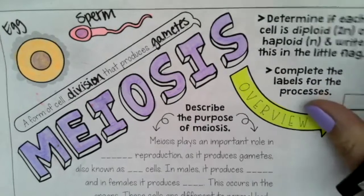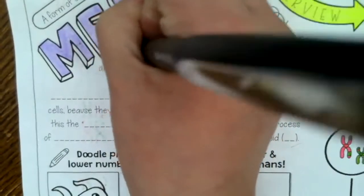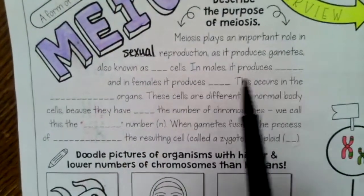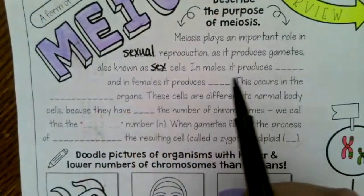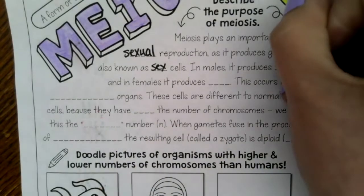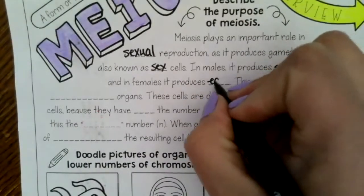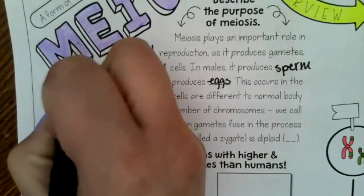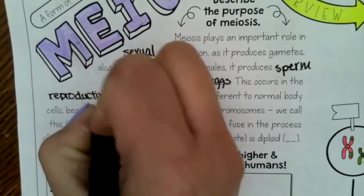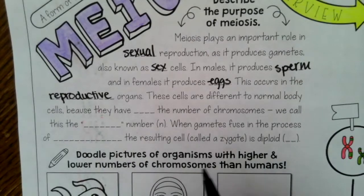Now we're going to describe the purpose of meiosis. Meiosis is going to play an important role in sexual reproduction, as it produces gametes, which are also known as sex cells. In males they produce sperm, and in females it produces eggs. This is going to occur within the reproductive organs.